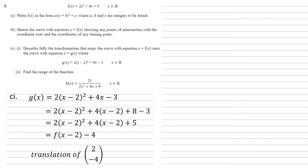For c part 2 we want to find the range of the function h(x) = 21/(2x² + 4x + 9). Replacing the denominator with our part a answer we get 21/(2(x + 1)² + 7).